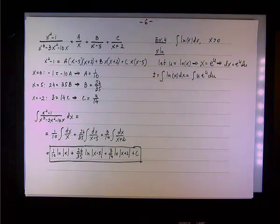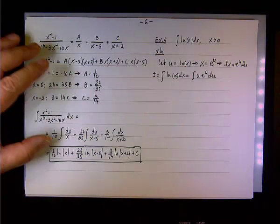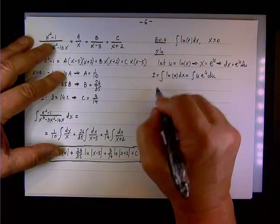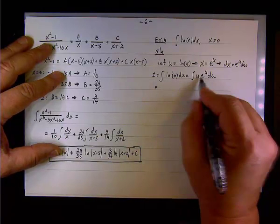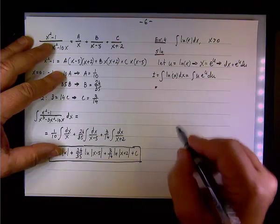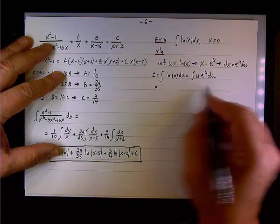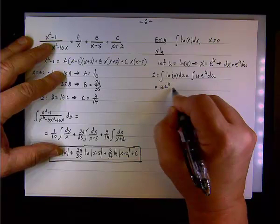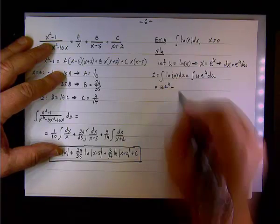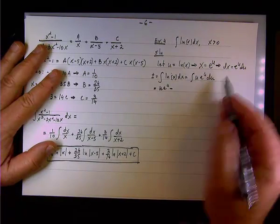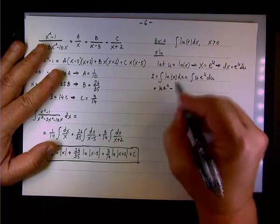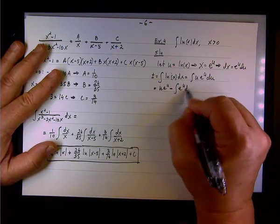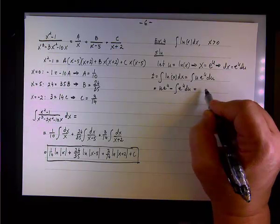Now we apply integration by parts. Here u is u and e to the u du gives v. So we get u times v, which is u·e^u, minus the integral of v du — that is, minus the integral of e to the u du.